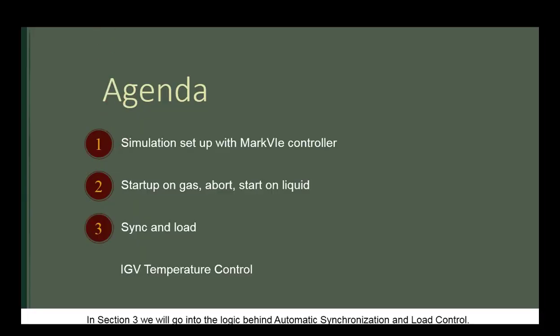In section 3, we will go into the logic behind automatic synchronization and load control. Then in section 4, we will go into temperature control with IGV bias.